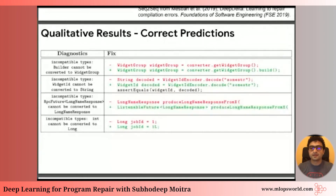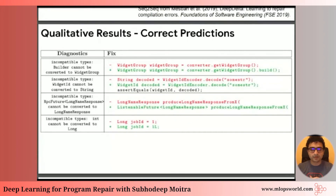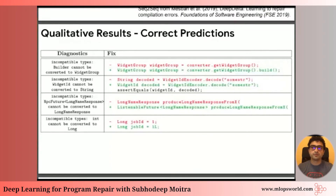A question from Kamal: is the performance based on all compiling errors in Google's database, or did you select certain types? We definitely restricted our errors to Java build errors of certain types, and did some filtering to exclude errors spanning multiple files. The scope was restricted, but we still got a database of 500,000 errors and fixes.